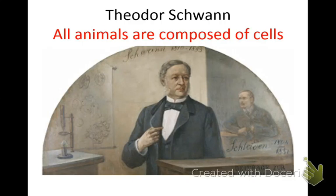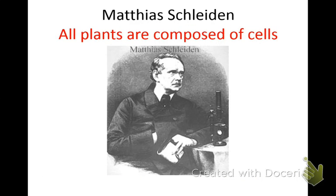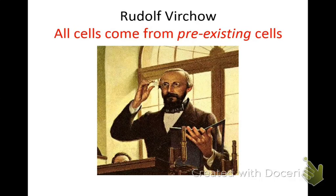Theodore Schwann proposed this second point — it says proposed by Theodore Schwann and Matthias Schleiden. Theodore Schwann worked with animals and Schleiden worked with plants, so oftentimes you'll hear this as the Schwann and Schleiden theory. All living things are composed of cells. And then the third one: all cells come from pre-existing cells.